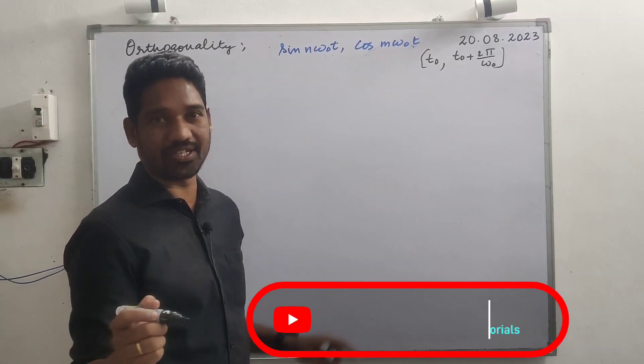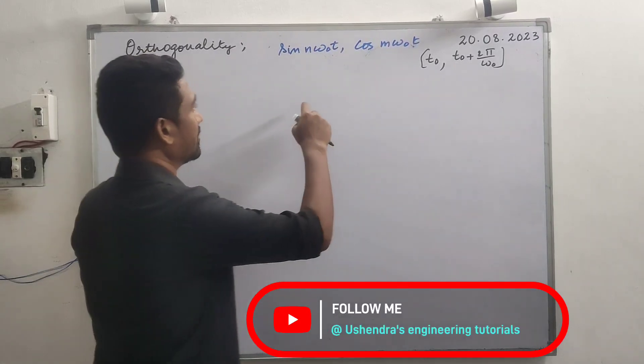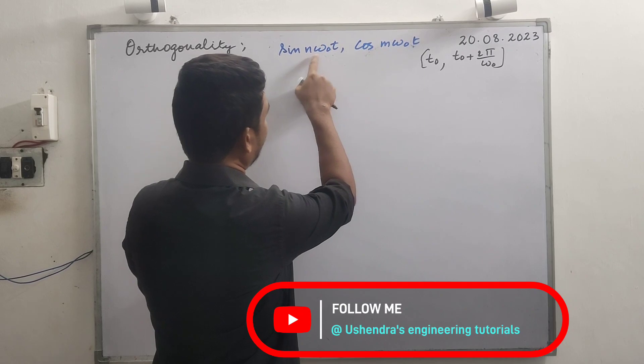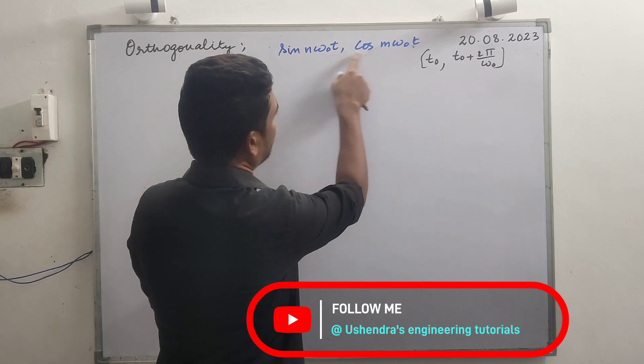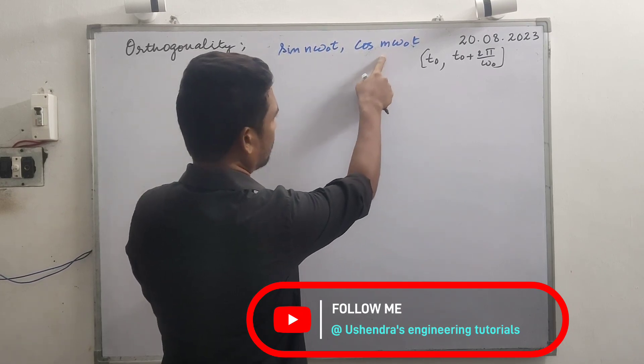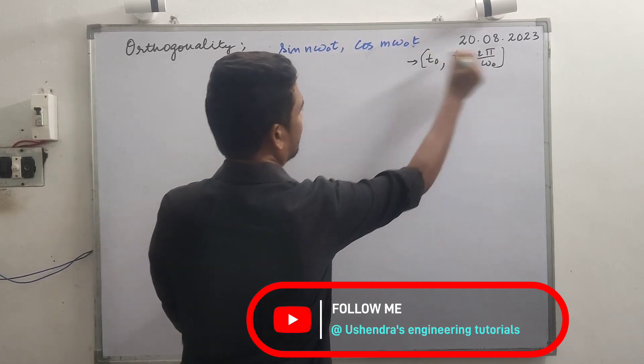Hey guys! This is about orthogonality. This is an important repeated question: prove that sin(nω₀t) and cos(mω₀t) are orthogonal over the given interval.